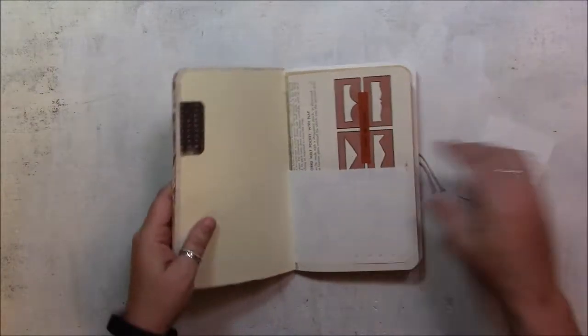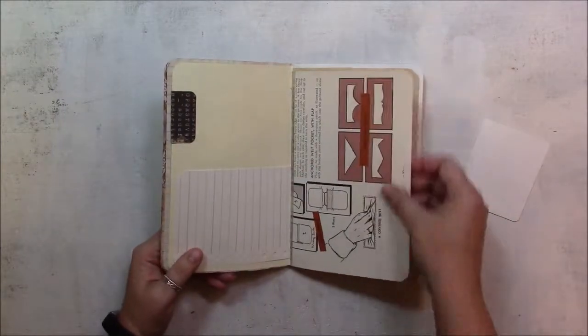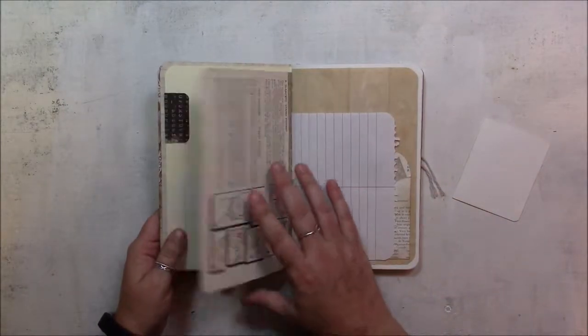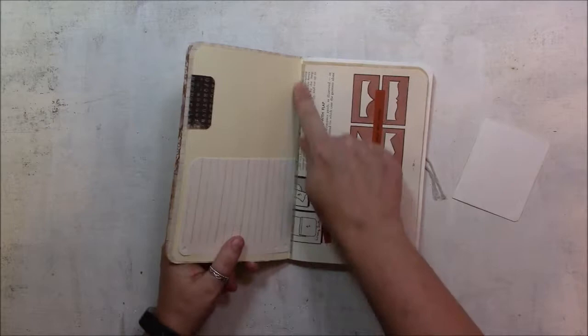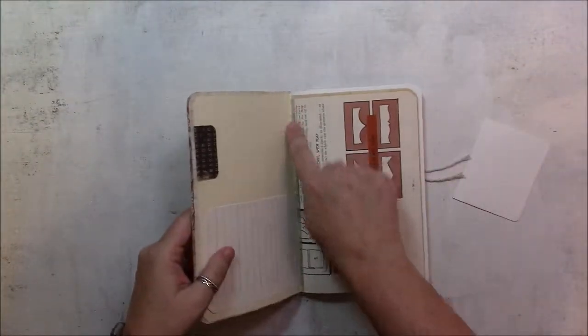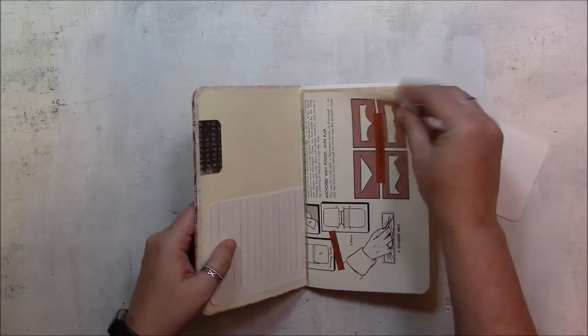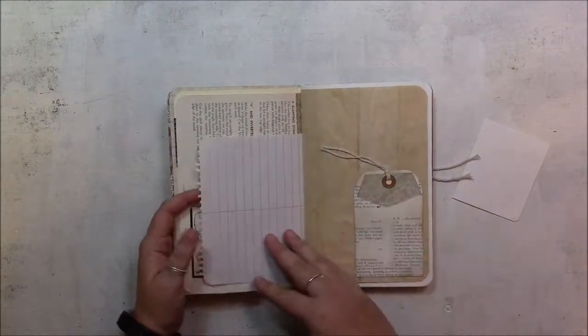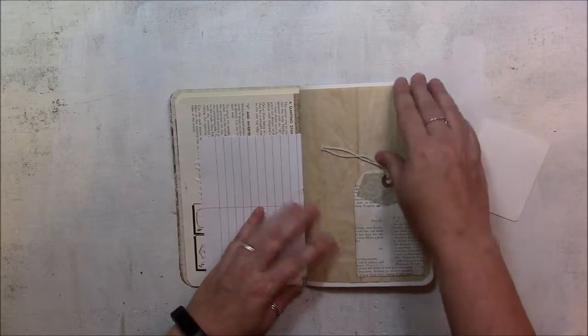This is a page from a vintage sewing book. It was a little bit fragile so I added some washi tape to the center of this paper. Here is, well this is from a steno pad on this side.